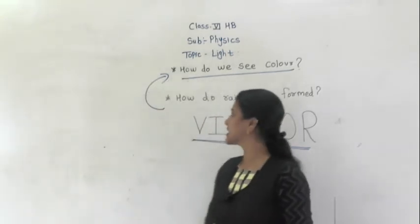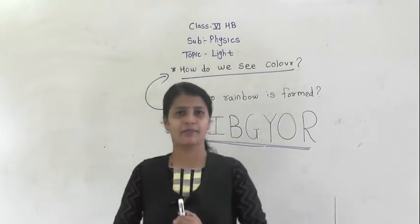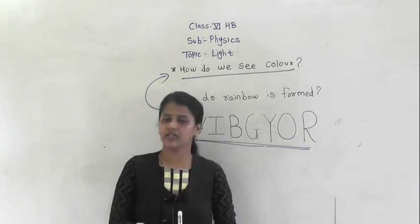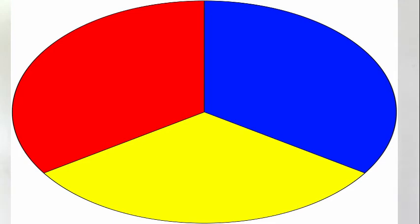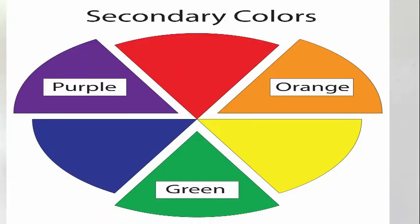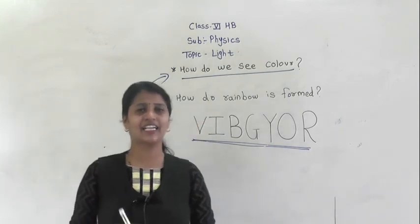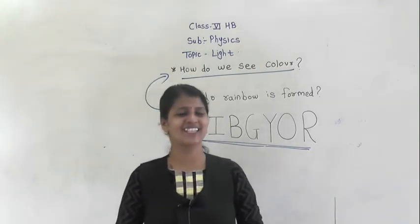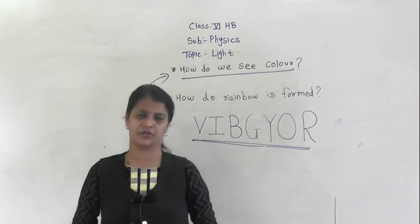In today's video, we discussed how we see color and how the rainbow is formed. There are mainly two types of colors — primary and secondary. Primary colors are red, green, and blue. In your physics notebook, write the primary and secondary colors, and also write how the rainbow is formed. In the next video, we are going to learn the different types of spherical mirror. Thank you.